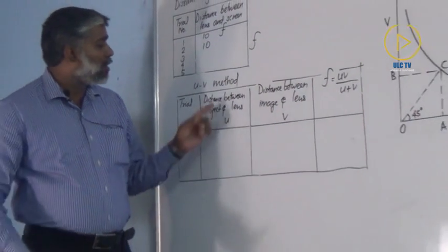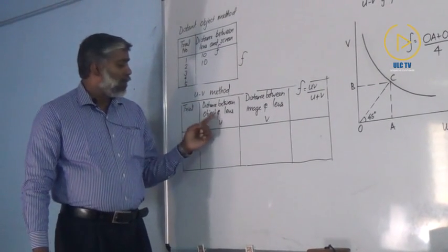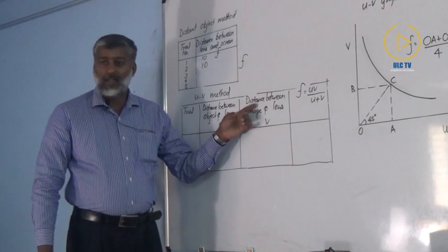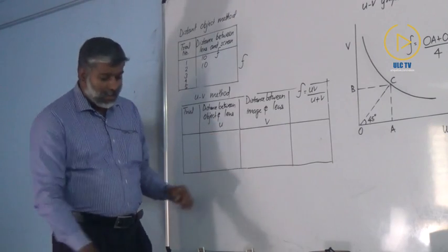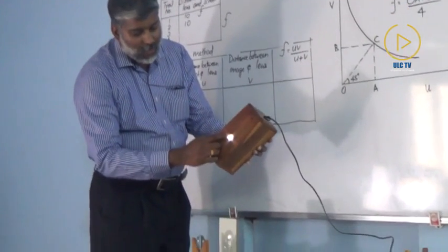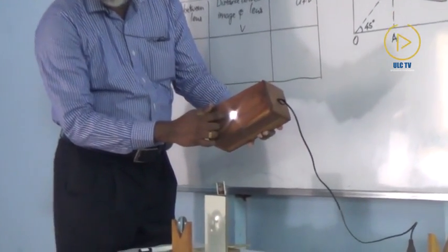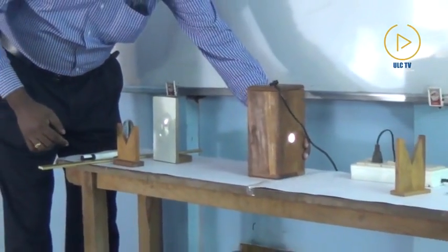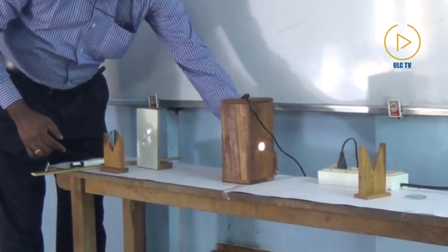Now the next method I am following is the UV method. U means the distance between object and lens, and V means the distance between image and lens. Here the object is an illuminated wire glass — you can find a net here, illuminated by a source, kept inside this wooden piece. The wire net is the object. I am drawing a line on the table and placing this object at a suitable position on this line.